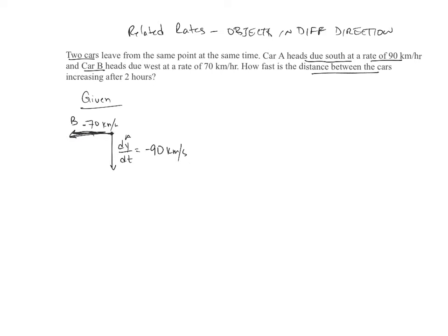How fast is the distance between the cars increasing? So we need to know what this rate right here is increasing. We'll just call it DS. We'll call that distance between them S, and we'll say that that rate is DS/DT. And we want to know what this is changing after two hours. So this is what we have to find.